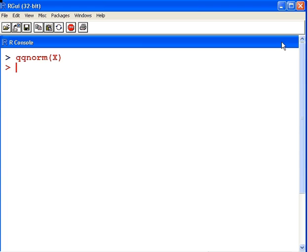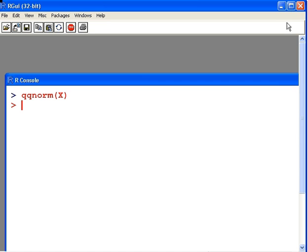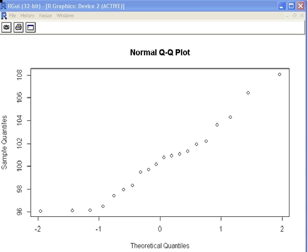The graphics will be on a different window, so I just have to find this other window. There we have it there. That's the output of the qqnorm function.